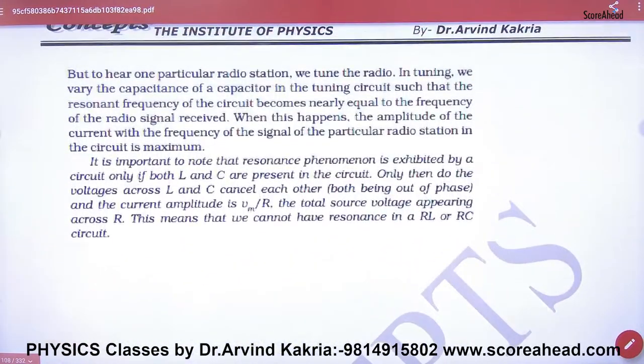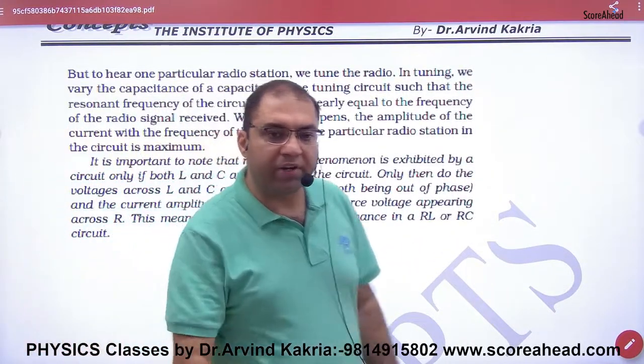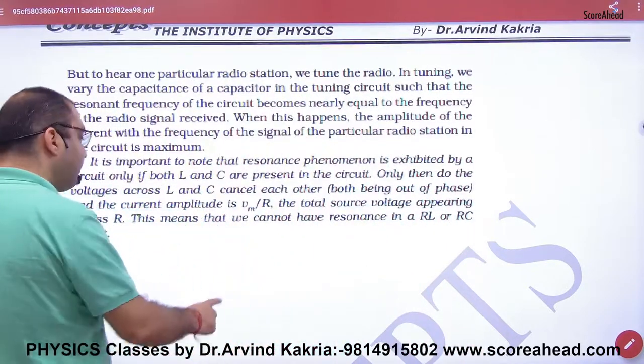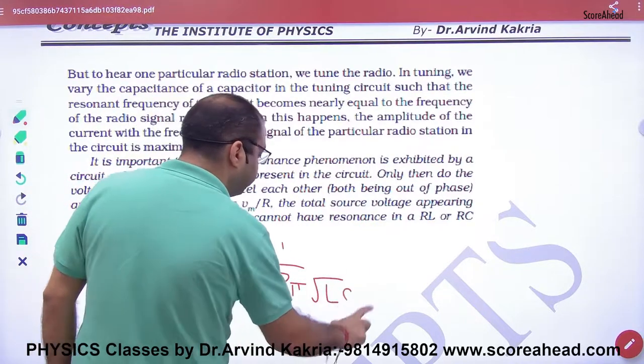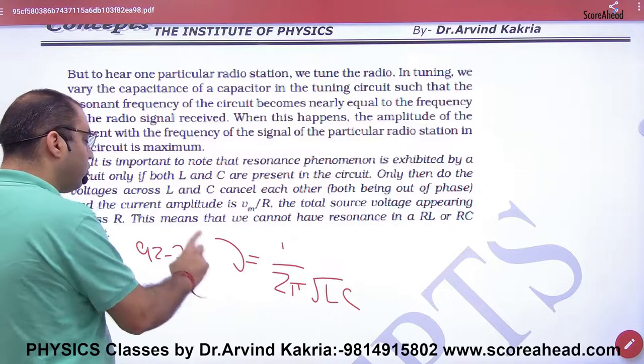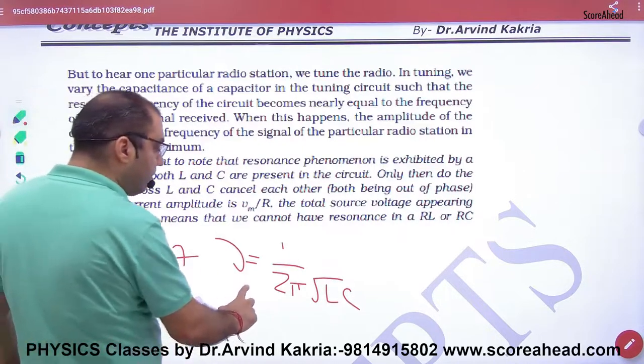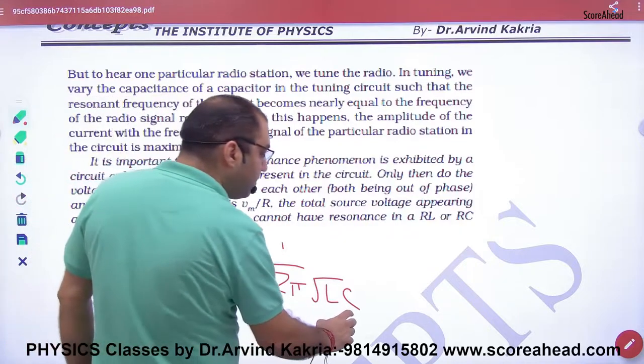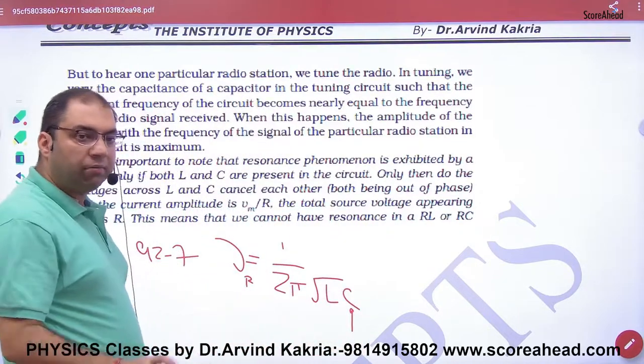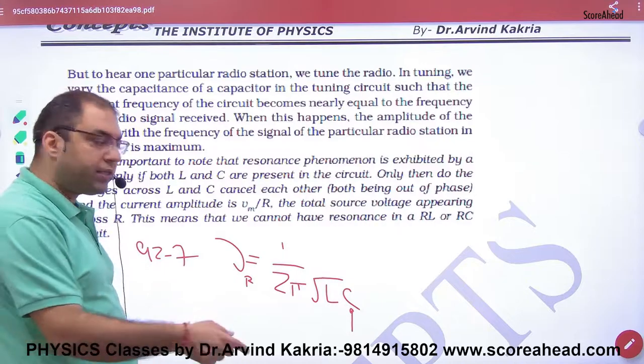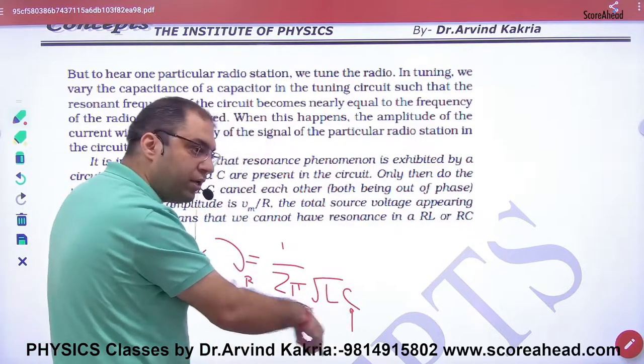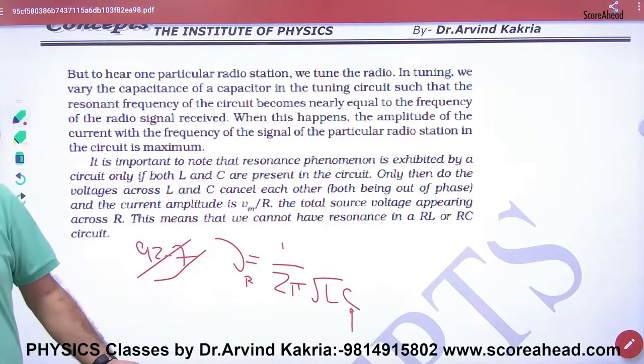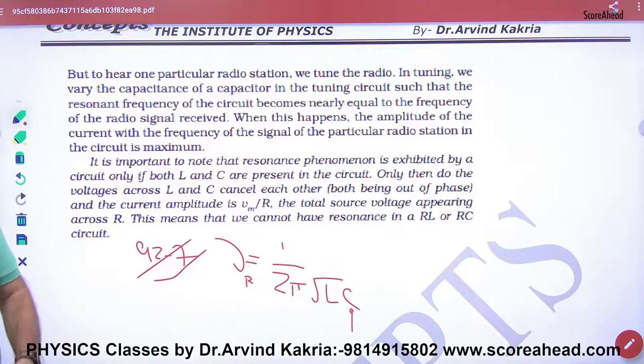The resonance frequency formula is 1/(2π√LC). If you want 92.7, you change C. When tuning, C changes so the resonance frequency becomes 92.7. When we want 94.3, then C will change accordingly. We can change only the capacitor value to tune the circuit.